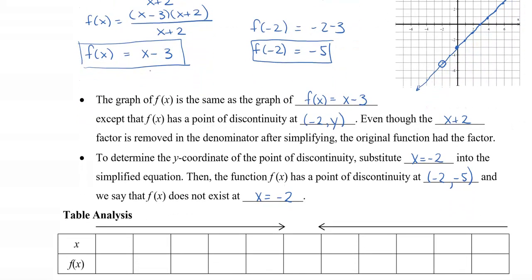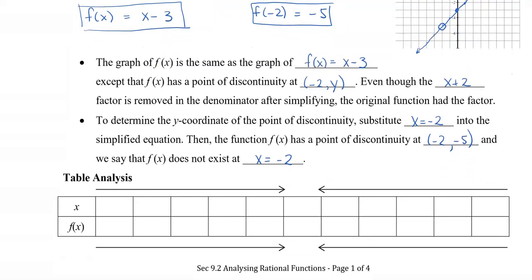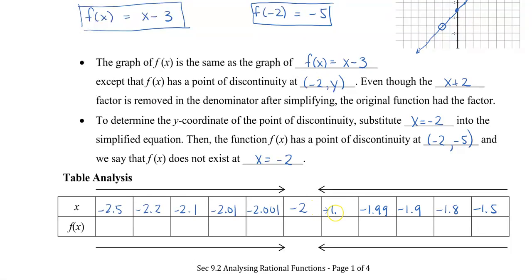I'm going to show one more approach: a table analysis. We have the algebra, we have the graph, and now a table. I'll use a table with values approaching negative 2 from the left — starting at negative 2.5, then negative 2.2, negative 2.1, negative 2.01, negative 2.001 — and from the right — starting at negative 1.5, then negative 1.8, negative 1.9, negative 1.99, negative 1.999 — to see what happens as x gets closer and closer to negative 2.